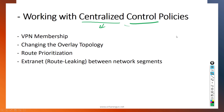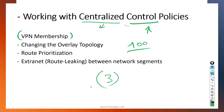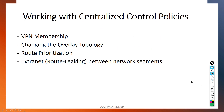We have centralized control policies, which deal with control plane functions. For example, we can configure VPN membership — specifying which sites participate in specific VPNs, such as VPN 100, or isolating certain VLANs at certain sites. We can also change the overlay topology by manipulating OMP routes to make changes to the SD-WAN fabric. By default, the overlay topology is full mesh, where WAN edge devices can create direct tunnels with each other, but you can change this behavior.